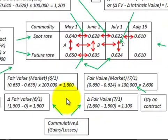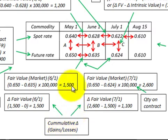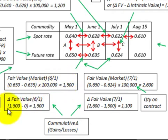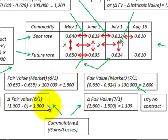To determine the change in fair value for each period for this futures contract, we're looking at cumulative changes in gains and losses for the periods. Looking at our first period of June 1st, we take the gain of $1,500 for the period and subtract any gain or loss from the previous period. Since it was at contract inception and had no value, our change in fair value was $1,500.